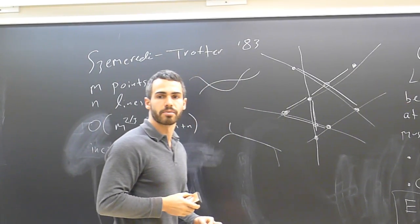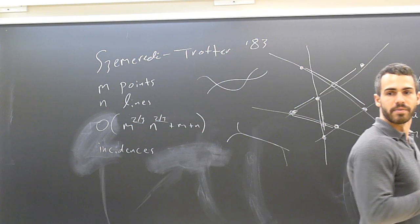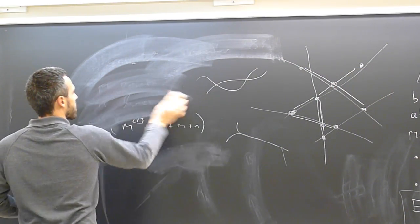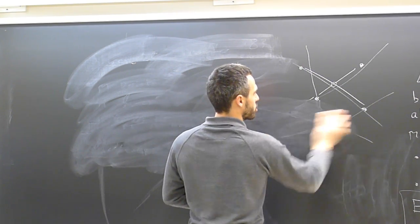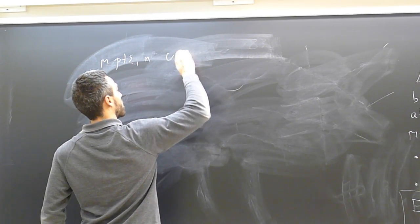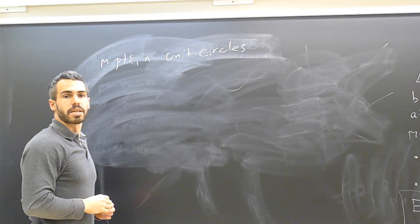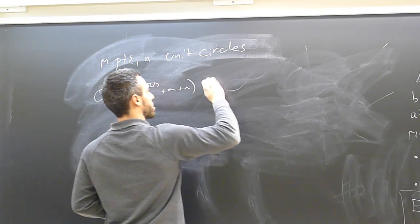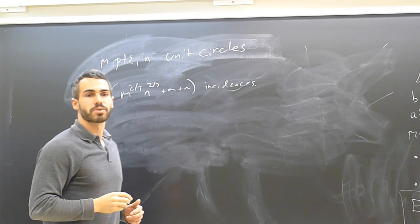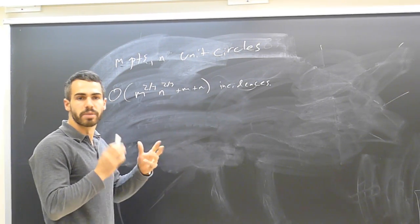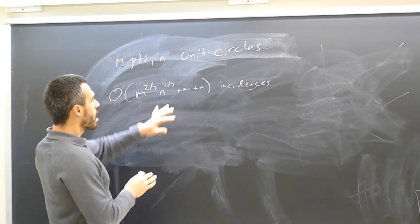This bound is sharp — there are configurations of points and lines achieving it — and it's essentially the only sharp result known in incidence geometry. For other curve families, such as unit circles (m points and n unit circles), the same proof gives m^{2/3} n^{2/3} + m + n incidences, but we don't believe that's sharp. The Erdős unit distance conjecture says when m equals n the answer should be around m^{4/3}, and we expect it to be closer to m^{1+ε}. We have no idea how to prove it.